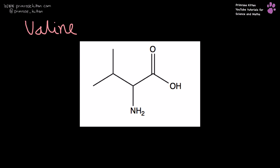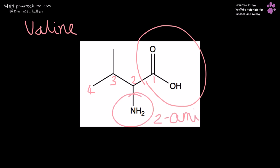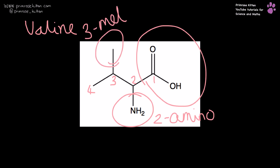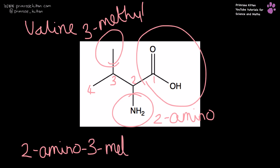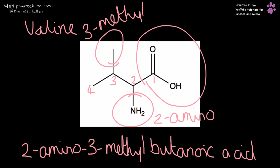Valine — this is the last one. Obviously all the other amino acids have IUPAC names, they are just really complicated and way beyond the spec, or way beyond what I would expect a student to be able to do. Here is our carboxylic acid group: one, two, three, four — that is 2-amino-3-methylbutanoic acid.